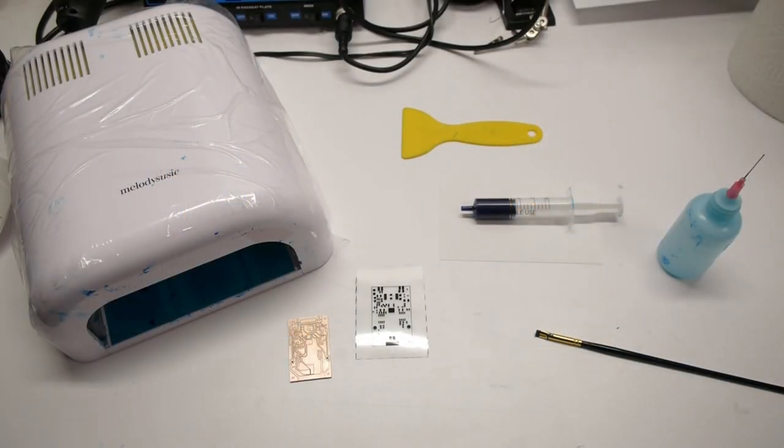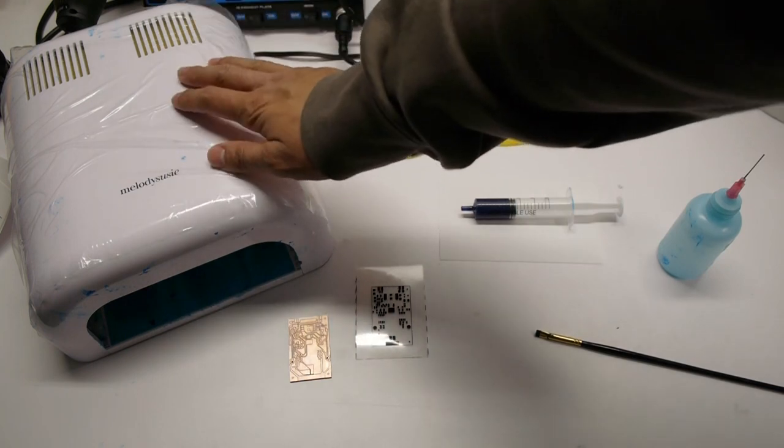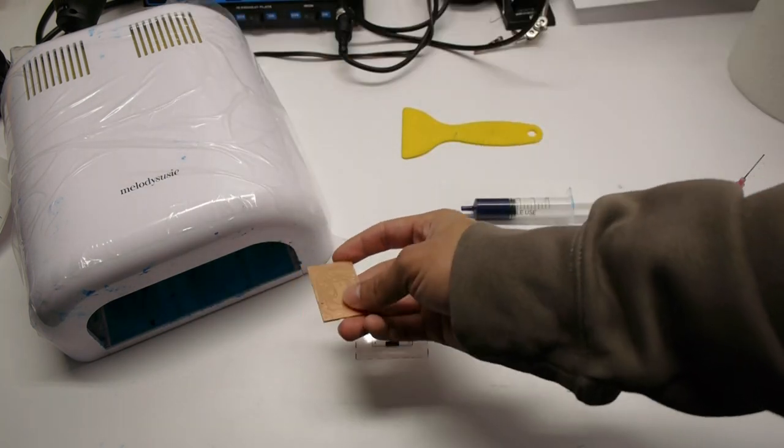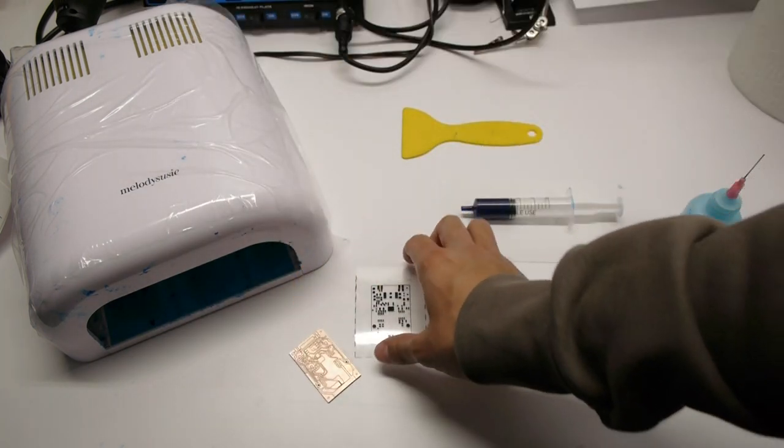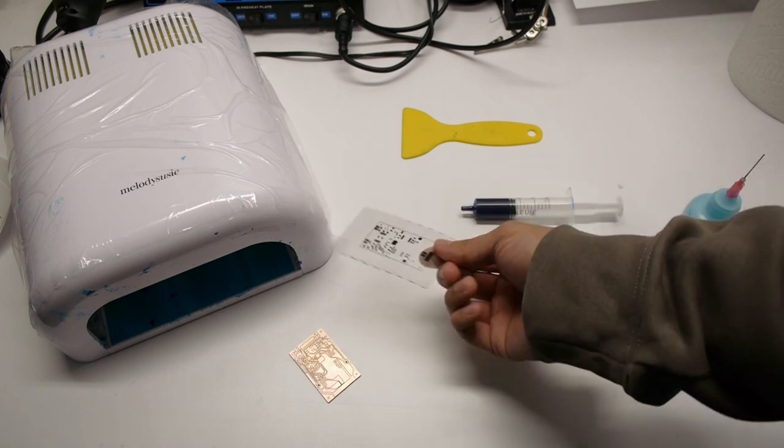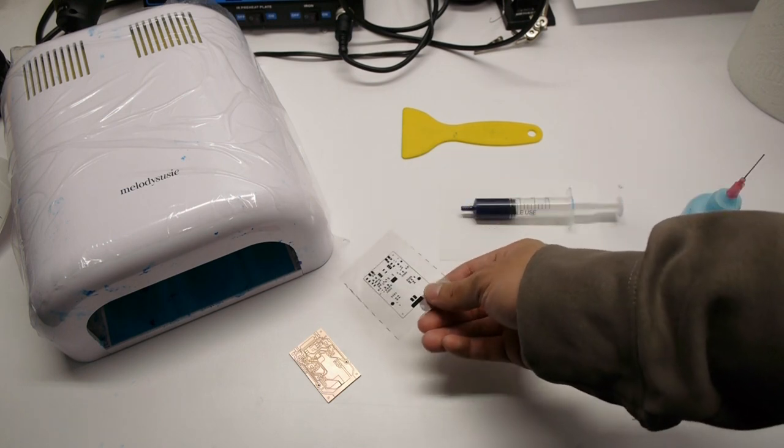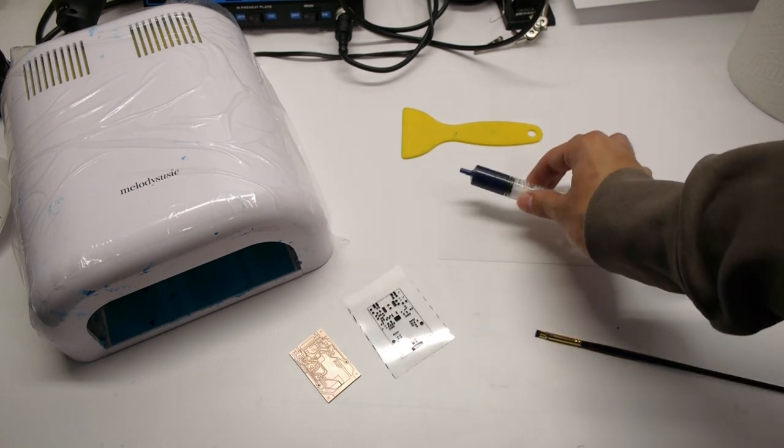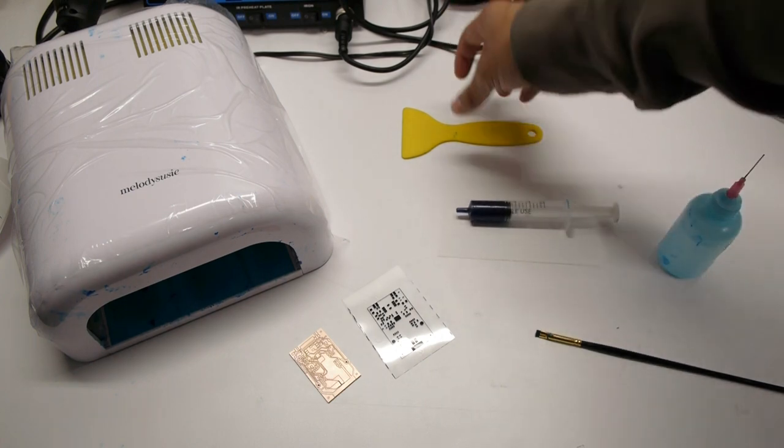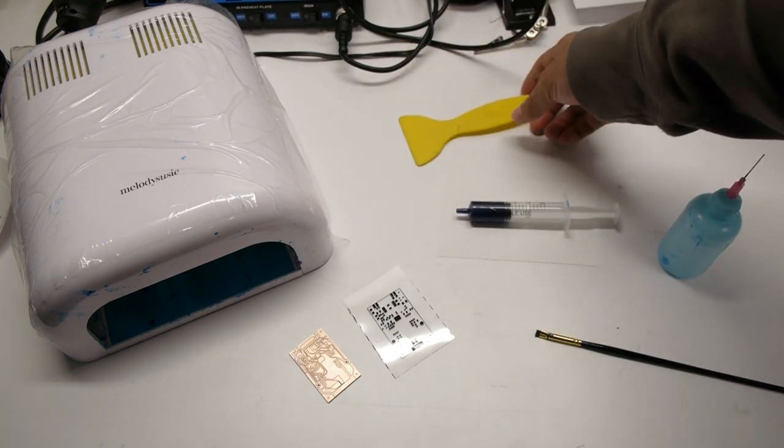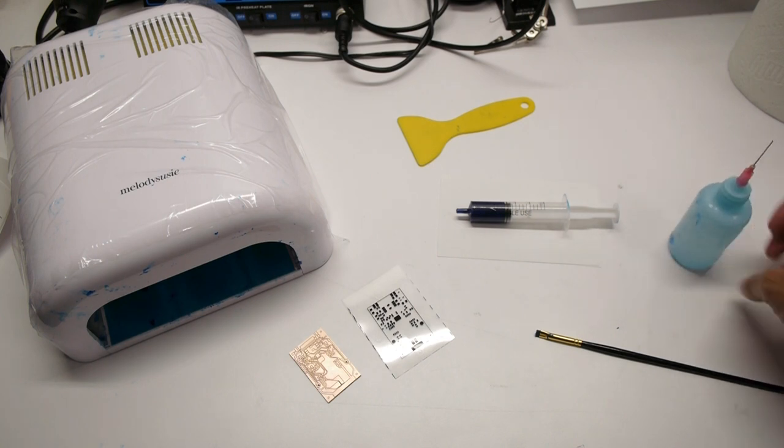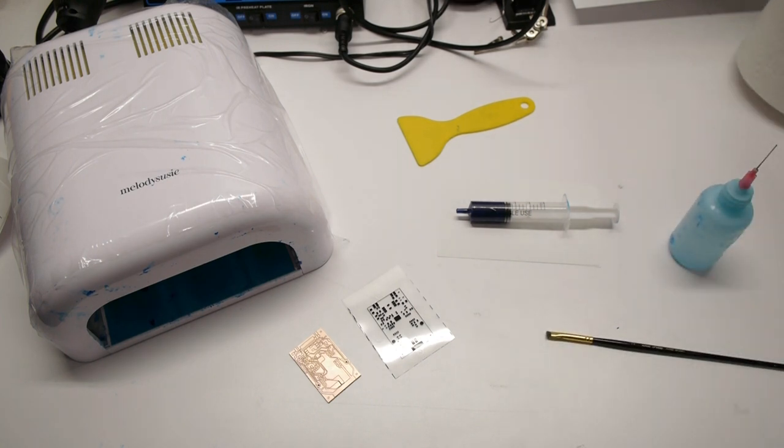These are the items I'll be using for this video. I got a UV light source, bare copper board, a printout of the solder mask layer on this transparency film, liquid solder mask, this spreader knife, and some cleaning items like alcohol, this brush, and paper towels.